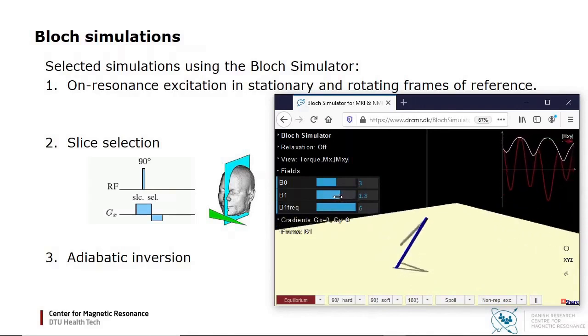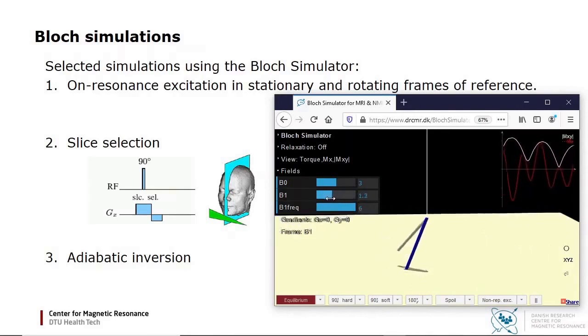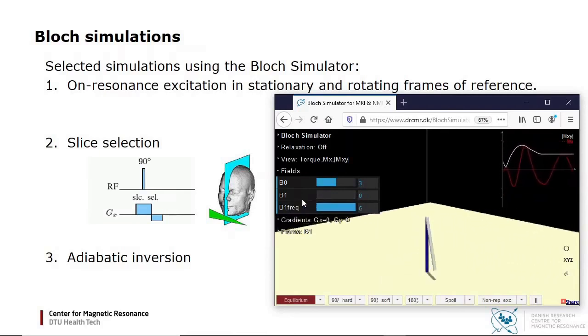The result is an approximate inversion of the magnetization, which at all points stayed close to the effective field vector.